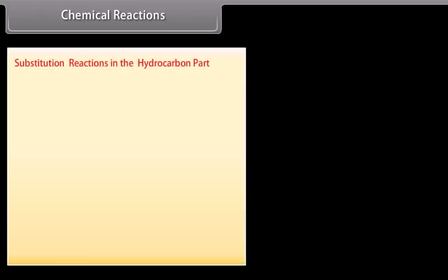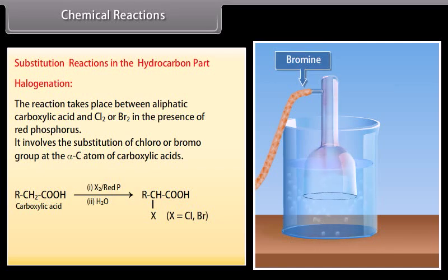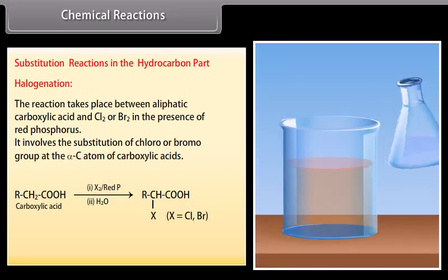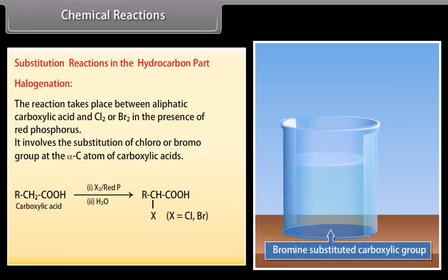Substitution reactions in the hydrocarbon part. Halogenation: the reaction takes place between aliphatic carboxylic acid and chlorine or bromine in the presence of red phosphorus. It involves the substitution of a chloro or bromo group at the alpha carbon atom of carboxylic acids. This reaction is known as the Hell-Volhard-Zelinsky reaction.